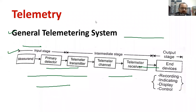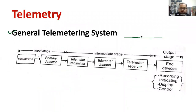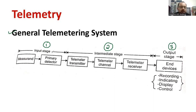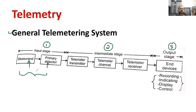Now I am going to discuss about the block diagram of the telemetry system. As you can observe, the telemetry system comprises of three stages: we have the input stage, the intermediate stage, and the output stage. Moving on to the input stage — we have sensors or transducers, referred to as measurement, and then there is a primary detector. These elements comprise the input stage.